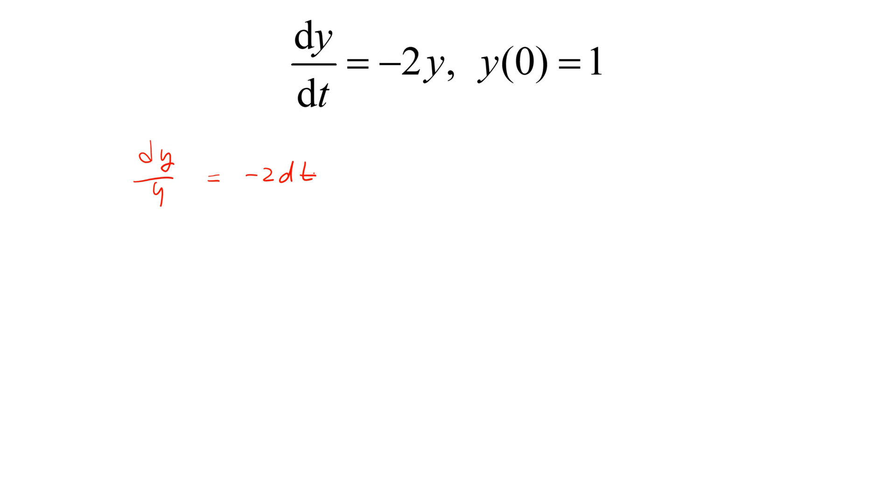To solve it for y, you can integrate over dy on the left-hand side as well as integrate over dt on the right-hand side. Using the indefinite integrals, you have natural log y on the left-hand side equals minus 2t plus c.